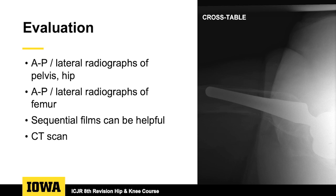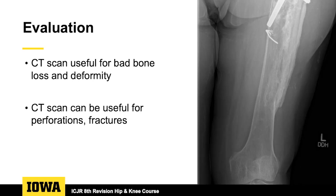If you look at the X-ray on the screen, you can see that bow on the femur is going to make it pretty hard if you don't do an anterior-based osteotomy. Sequential films can be helpful in all these revision cases when planning for the femoral defect.